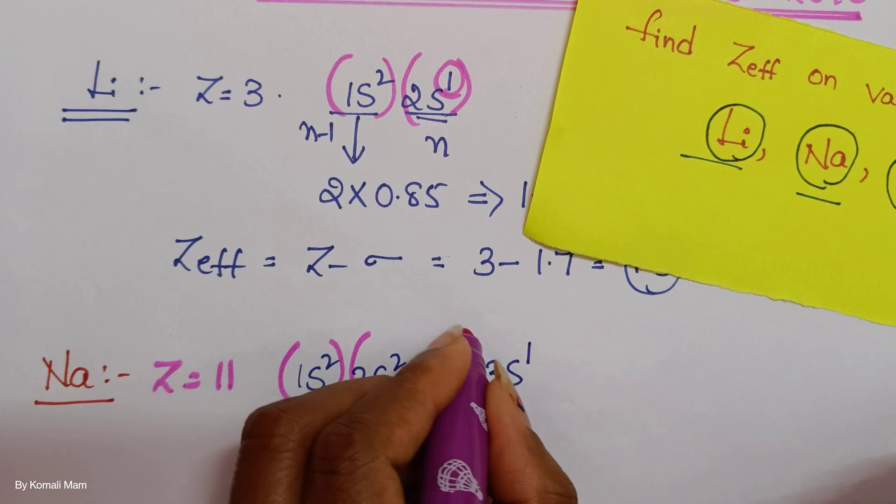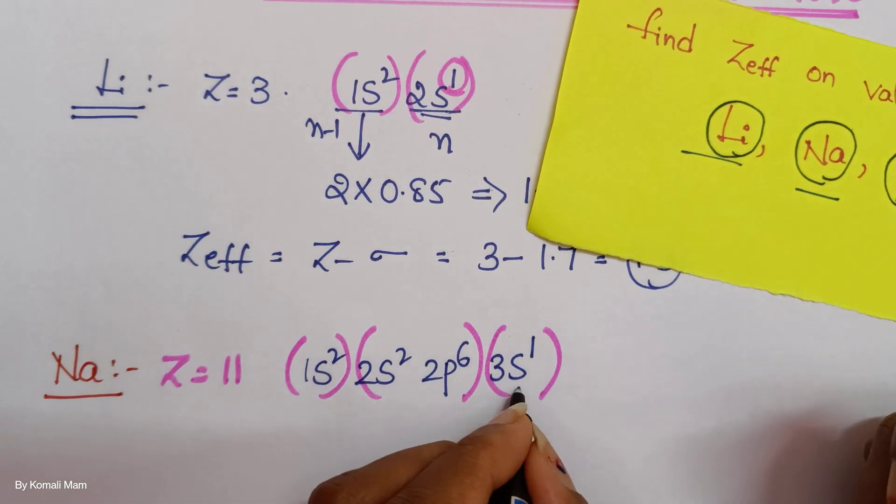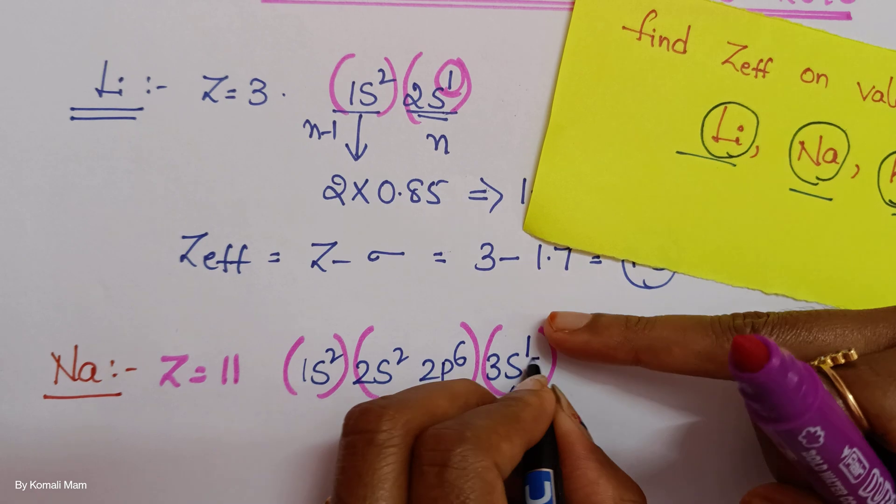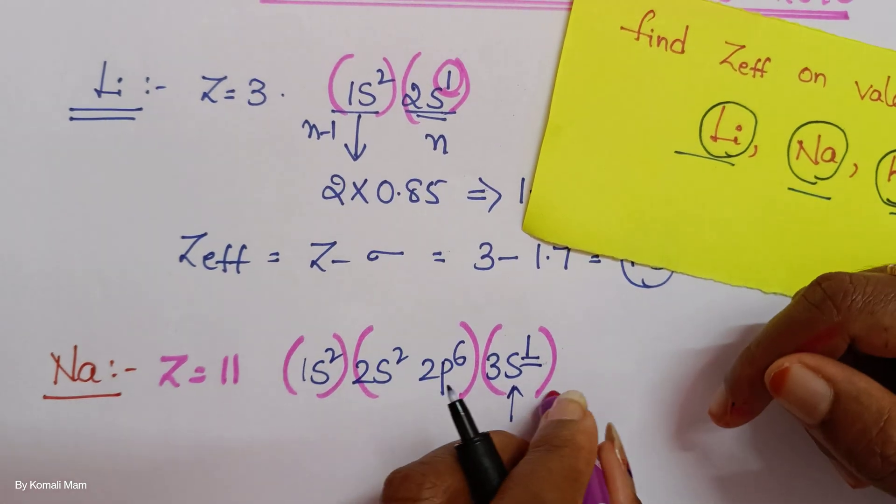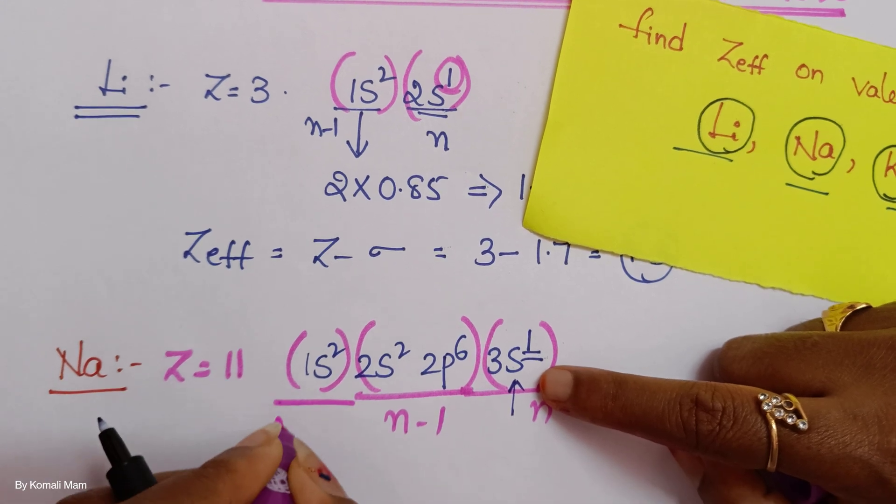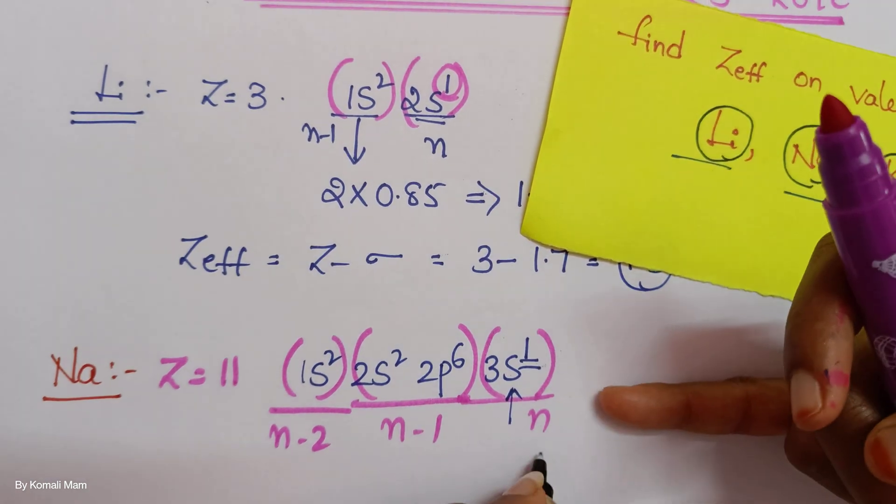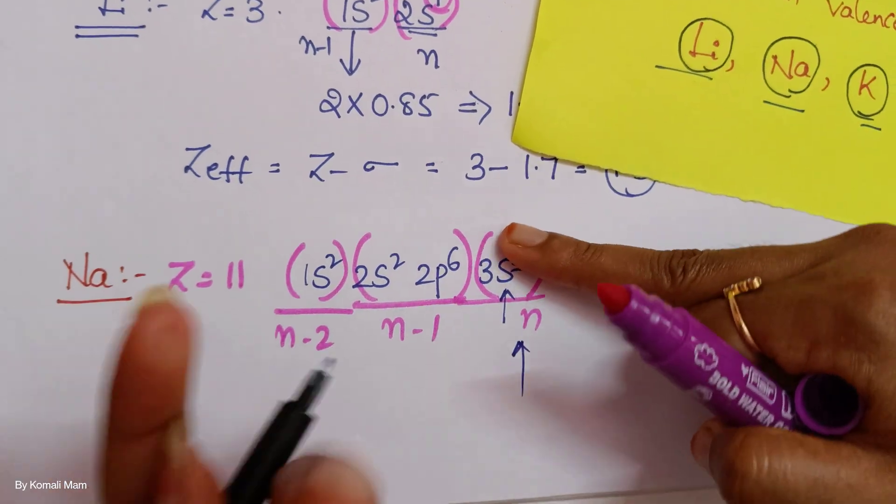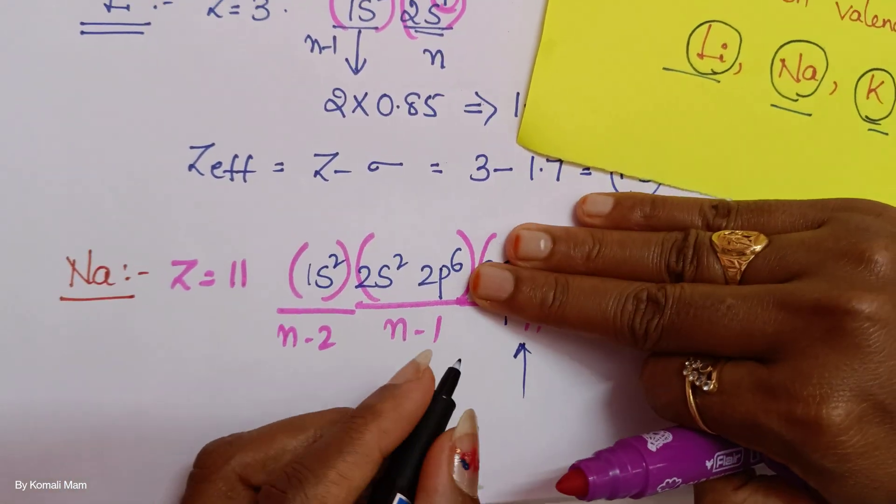S, sp together, s. You are counting for this one. Now only one electron is there. This is nth shell. This is N minus 1, this is N minus 2. Nth shell you are counting here. Now how many are? Only one is there, so nothing is left.